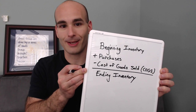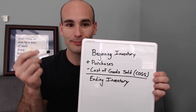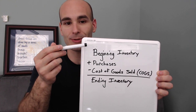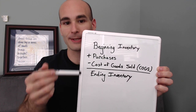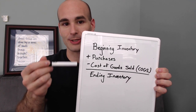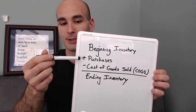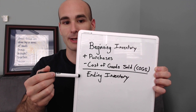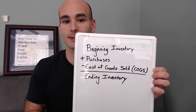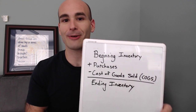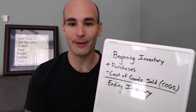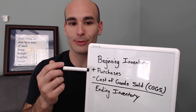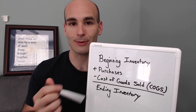Got my nifty whiteboard here today. When we're talking about inventory, we're talking about this equation: beginning inventory plus your purchases, minus your COGS or cost of goods sold, equals your ending inventory. What I like about this equation is it's basically an algebraic equation — A plus B minus C equals D.